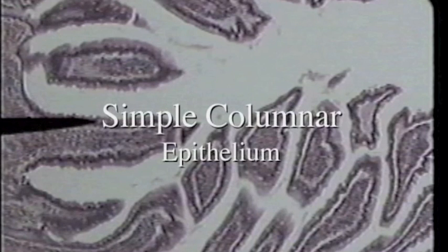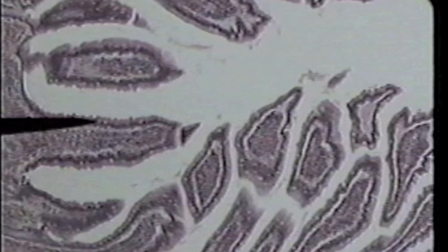This slide is the small intestine at low power. The tip of the pointer is on the epithelium lining the small intestine. We are looking at one layer of columnar cells, or simple columnar epithelium. It's not easy to tell that that simple columnar epithelium on low power, so the next slide will be at high power.